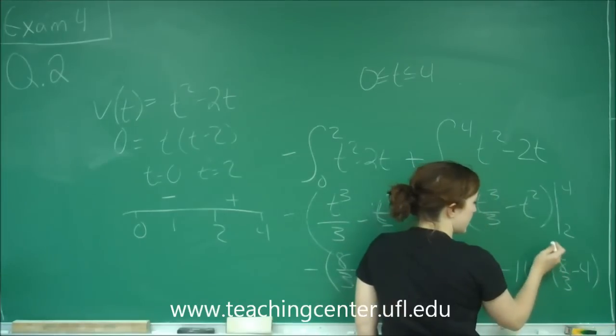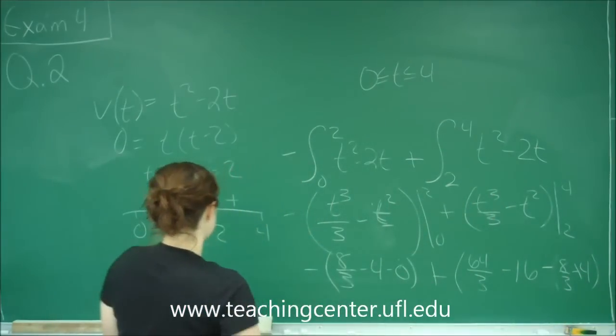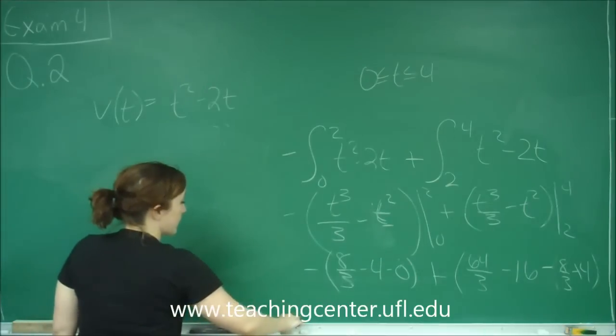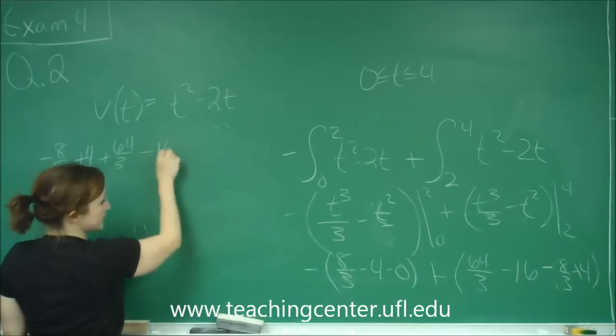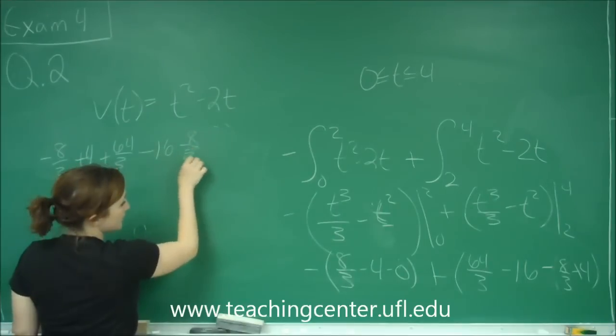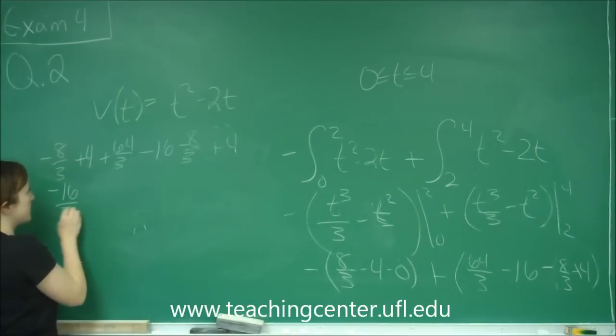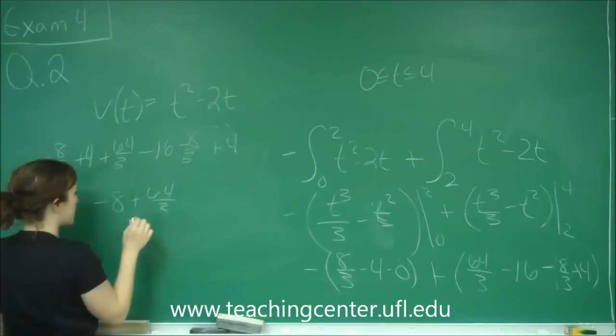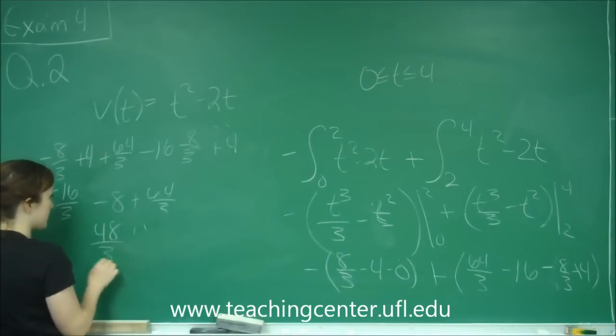And so when I distribute that, I get negative 8 thirds plus 4. So I can go through, I'm going to rewrite that over here. When I distribute all my negatives, I get negative 8 thirds plus 4 plus 64 thirds minus 16 minus 8 thirds plus 4. So I get negative 16 thirds plus 8 minus 16, so minus 8 plus 64 thirds. And then 64 minus 16 gives me 48 thirds minus 8. 48 thirds simplifies to be 16 minus 8.